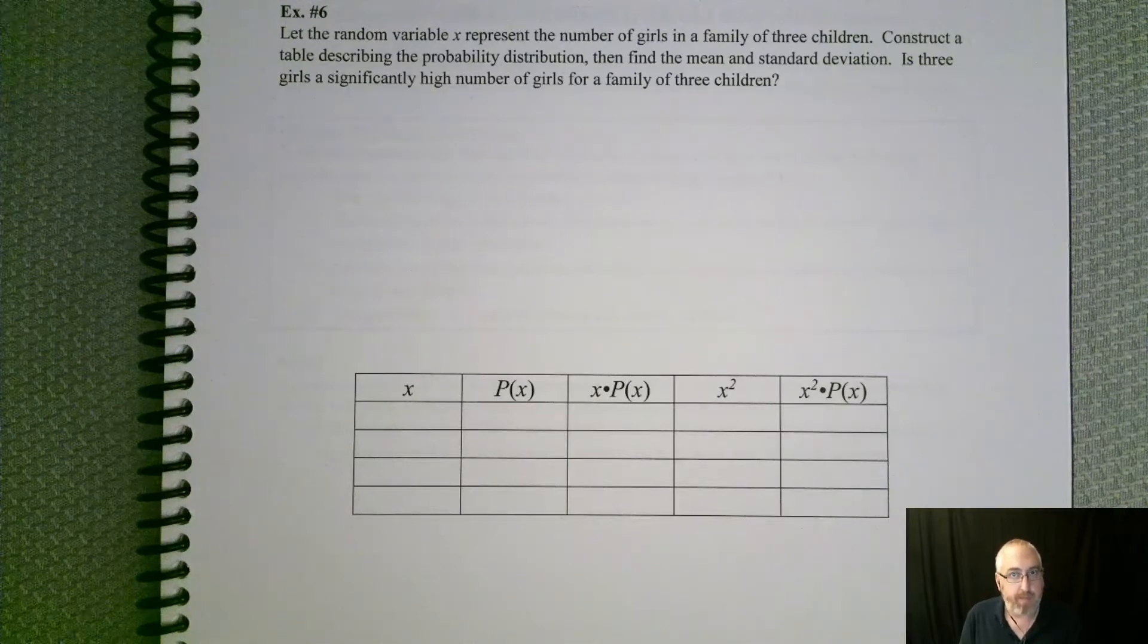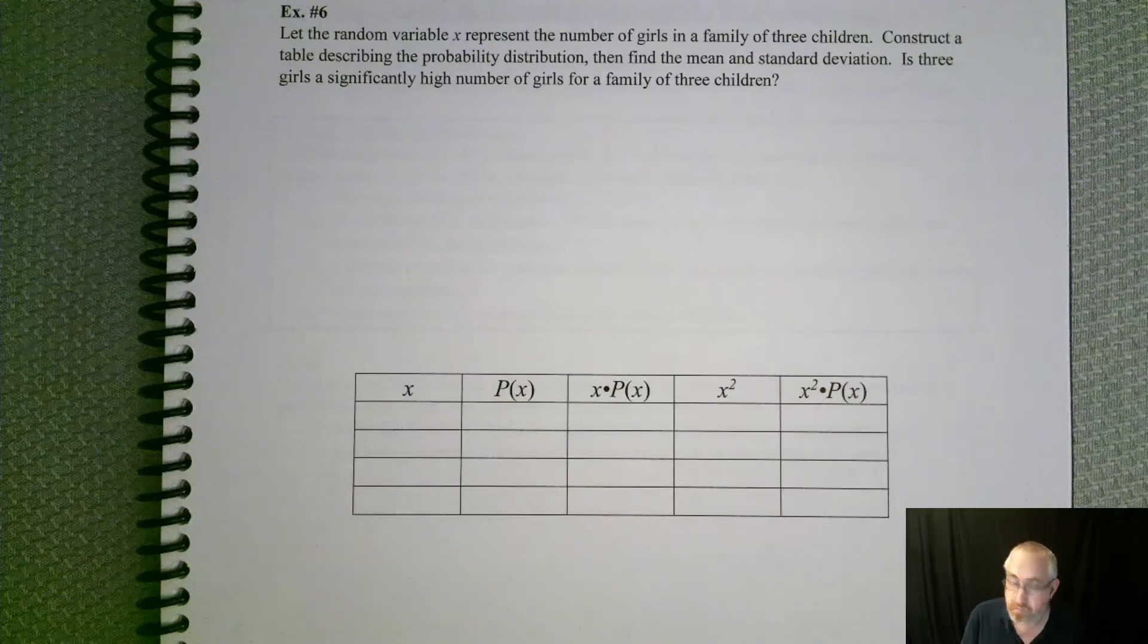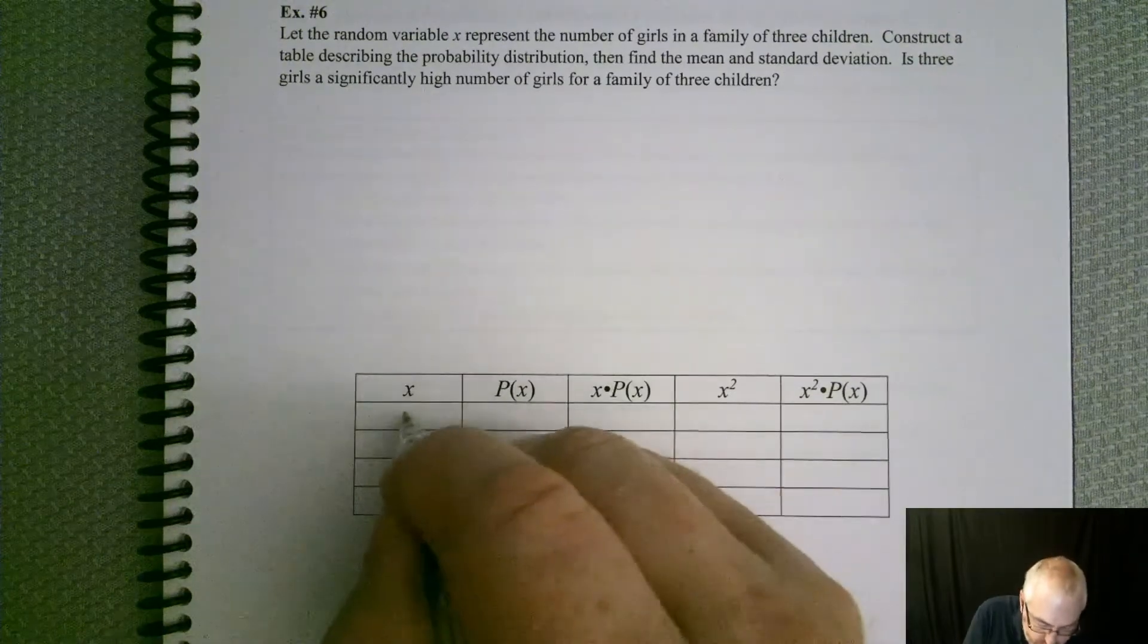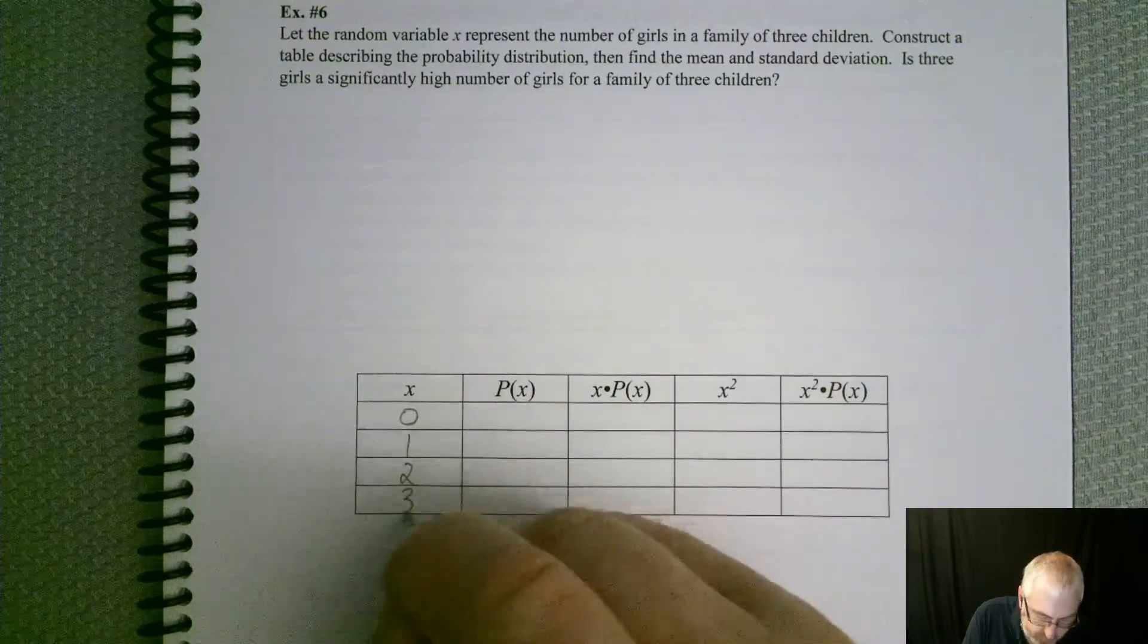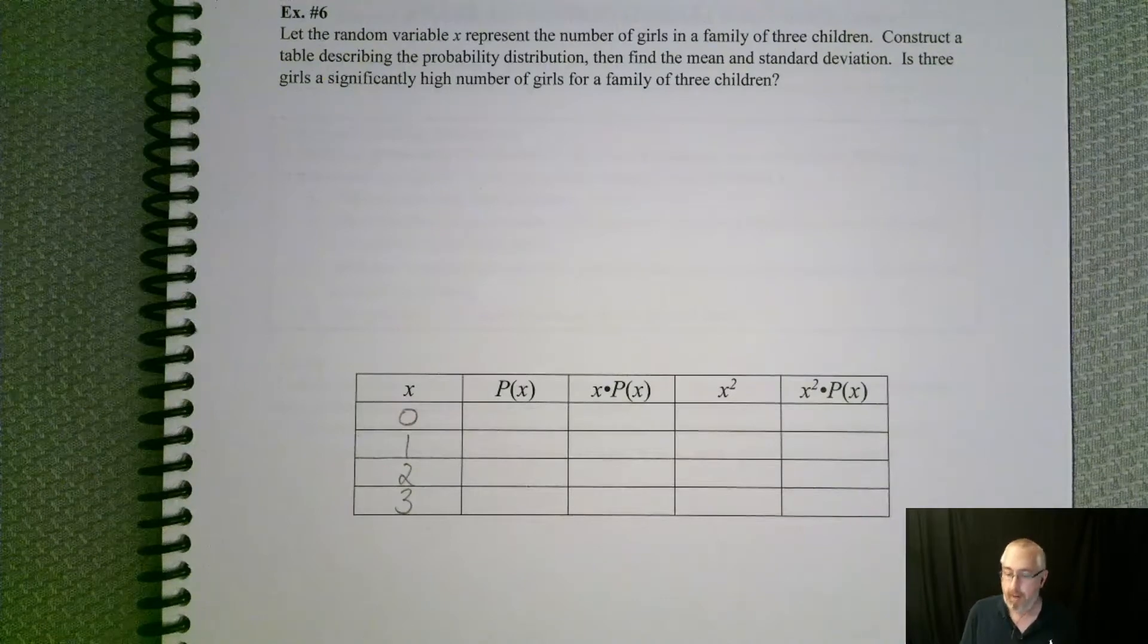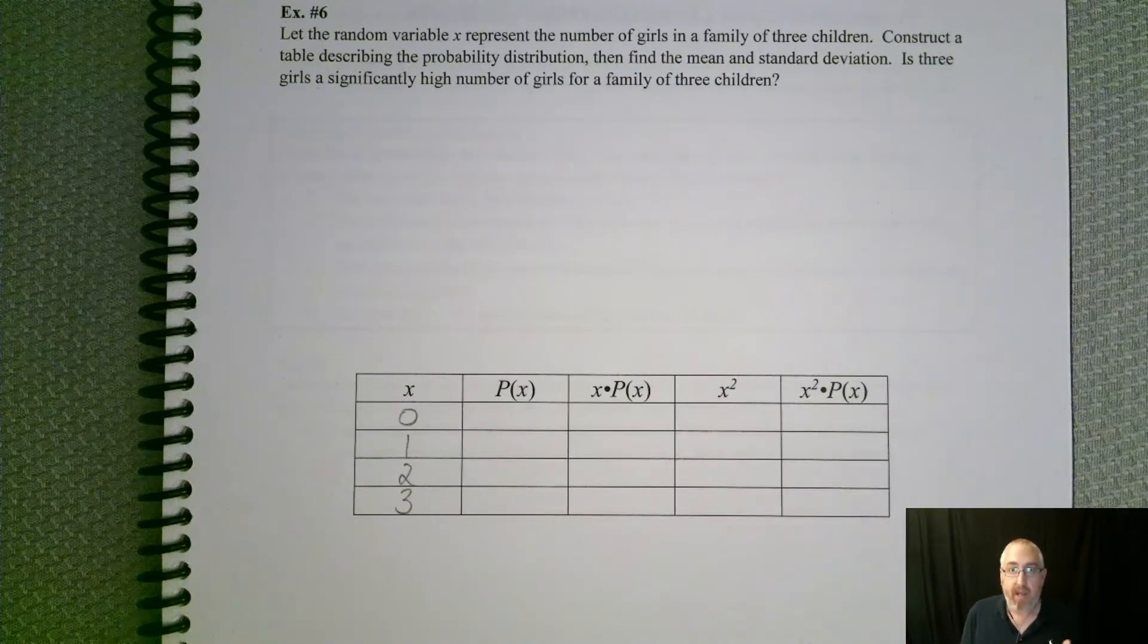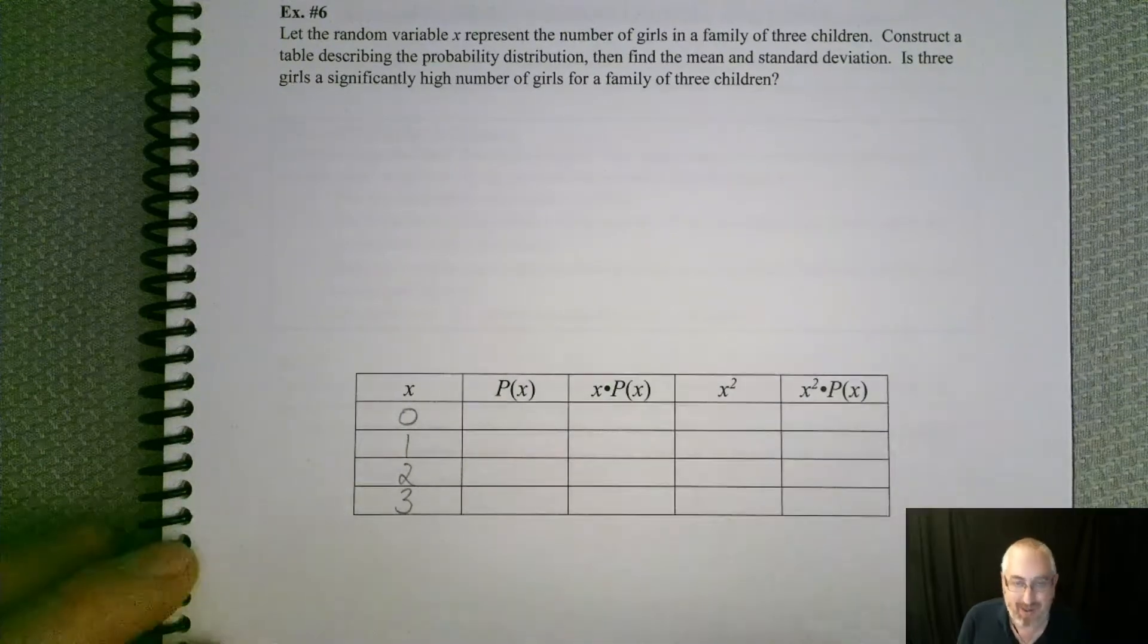Could you have no girls? Certainly, you could have all boys. You could have one girl, you could have two girls, or you could have all girls of three. So now, if we wanted to find our probabilities, we need to do a tree diagram.